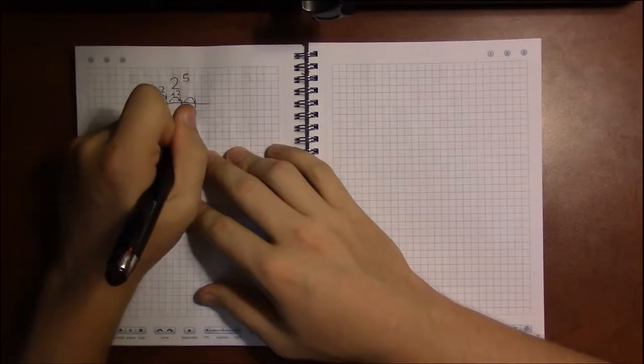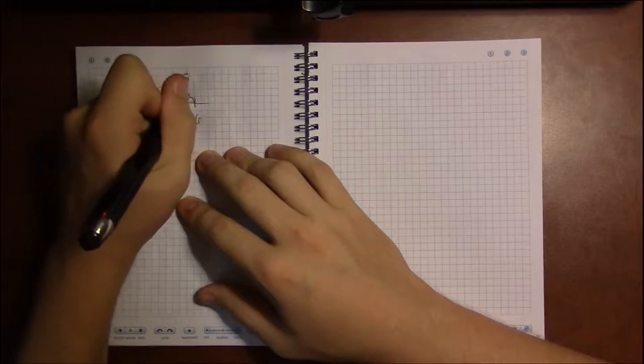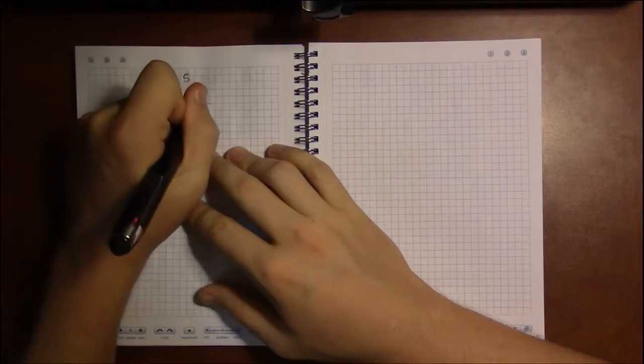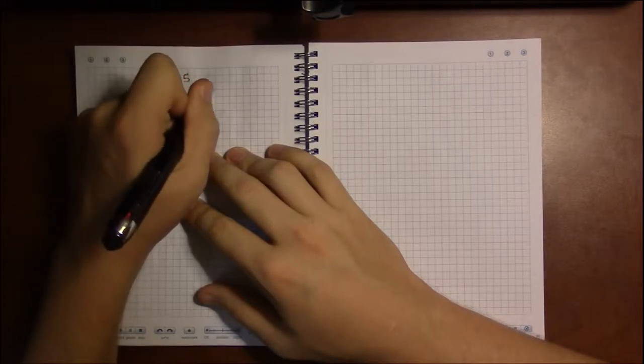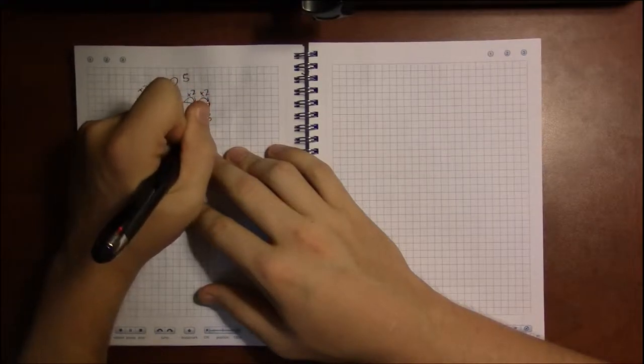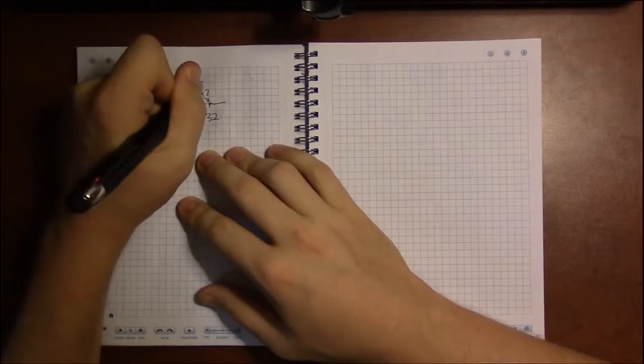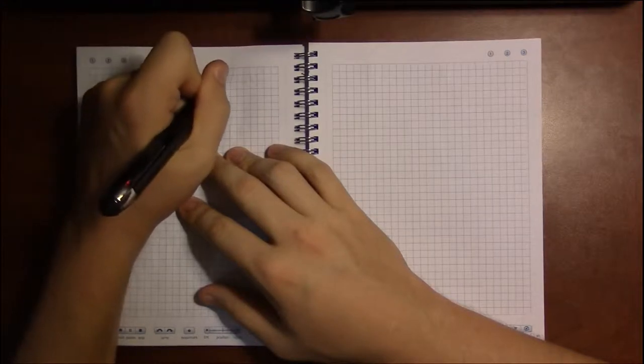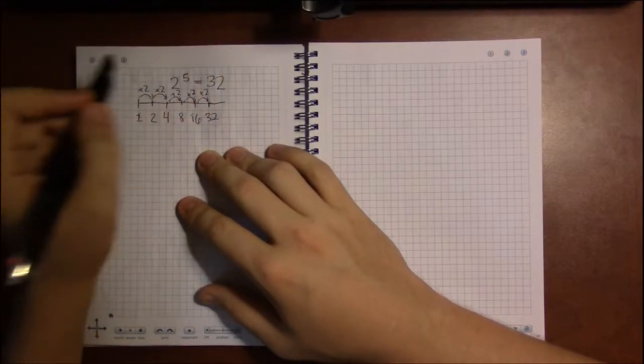Then 16. And finally, after your 5th times 2, you ended up at 32, which we took to be the answer for 2 to the 5th.